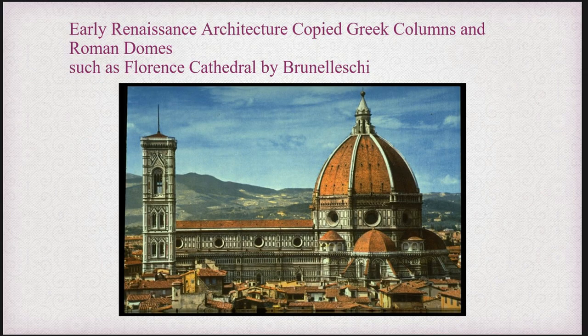We can go ahead and start with the architecture portion. We see Greek columns and Roman domes. When you look back to ancient Roman ruins, they were big on columns and they were big on domes. If you look at the Pantheon in Rome, it's mainly a dome feature. A lot of what's left in the Roman ruins from the early 100s, 200s, and 300s AD era are just columns. But columns and domes were big features in Greek and Roman architecture, and they start to make a comeback here during the Renaissance period.